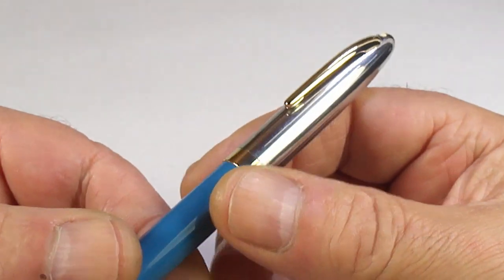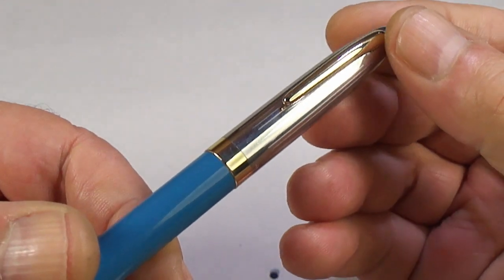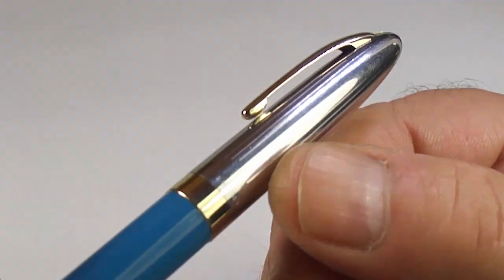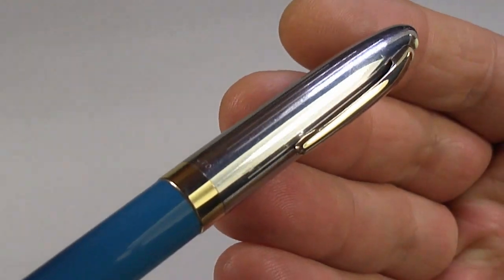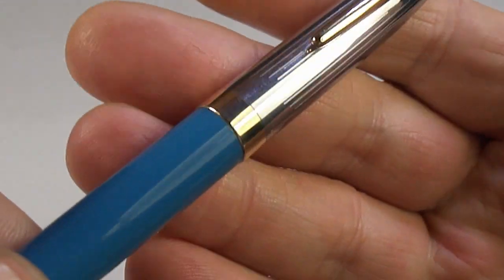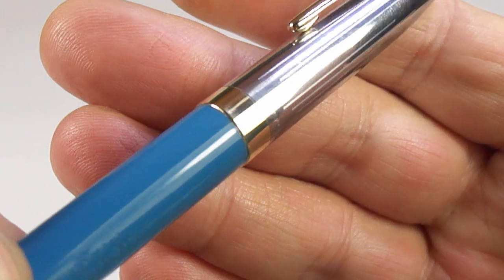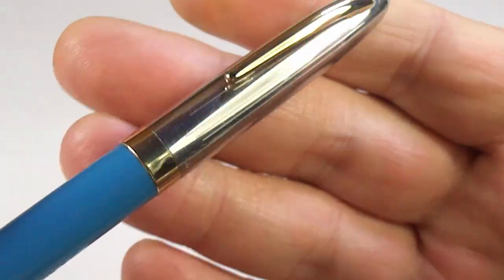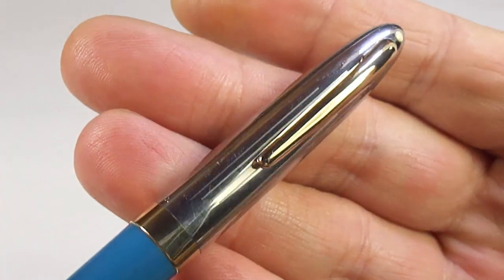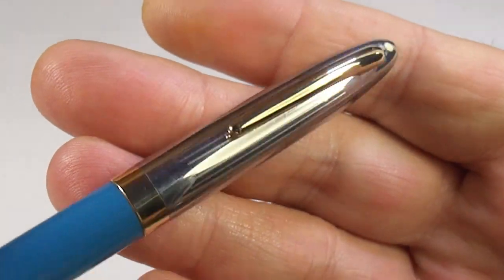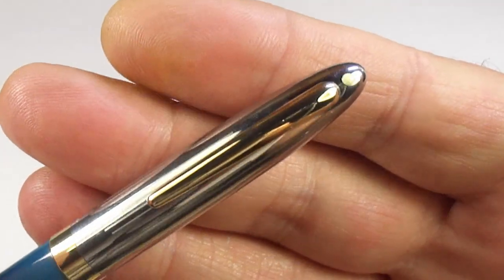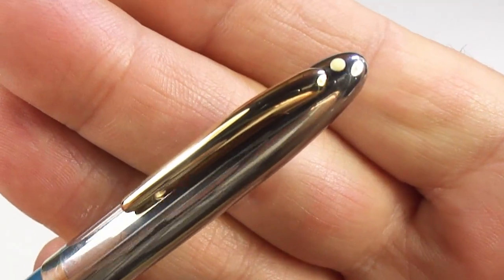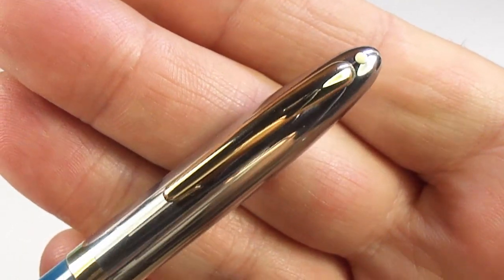It comes with this lovely chrome cap. If I show you the cap, the cap has got these lines running the length of the cap. And then just to the bottom there, it has a gold-filled cap band built into the cap. And we've got the very recognizable Schaefer clip there. And to the very top, we've got the white dot, as you can see there, just above the clip.